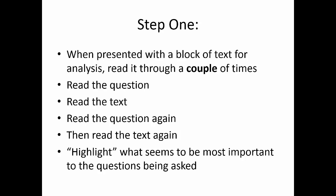In some versions of the AST you can't bring in a highlighter, but you need to highlight or underline — whatever you're allowed to do — what seems to be the most important aspects of the question being asked, and the lines or phrases in the poem that seem most directly related to the question.